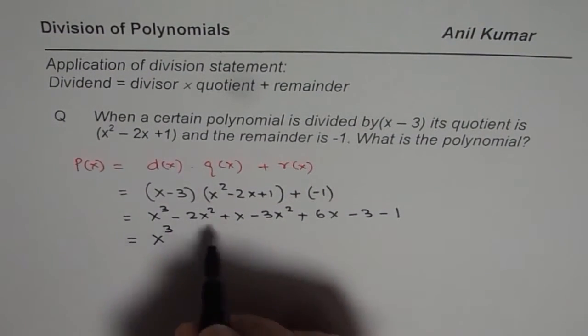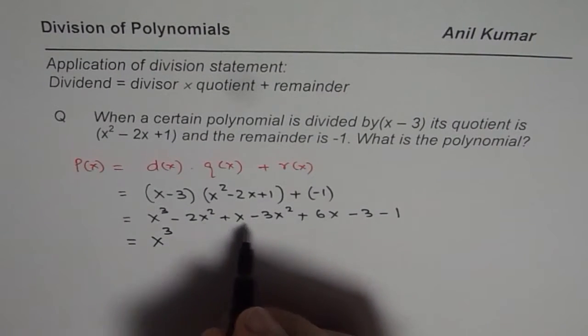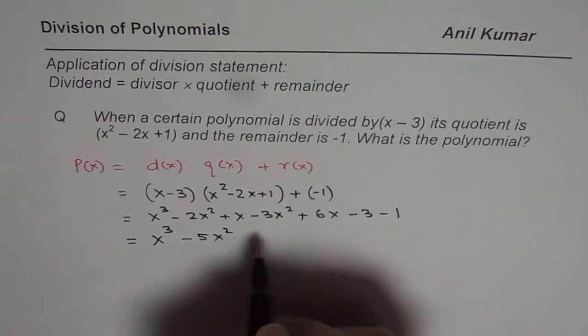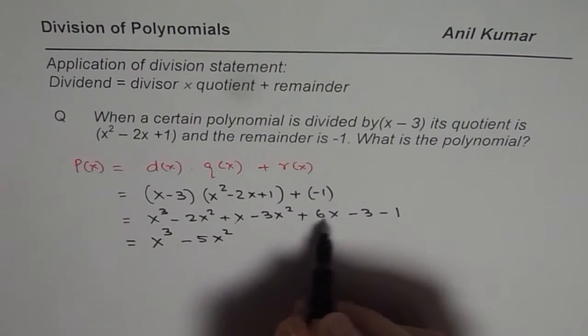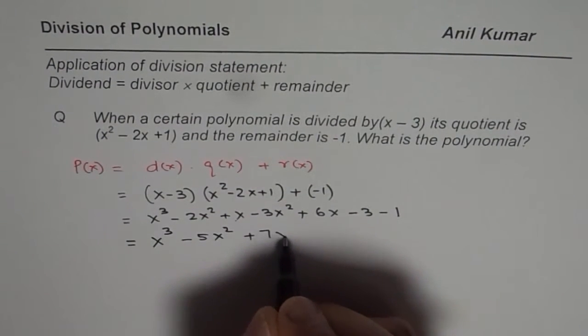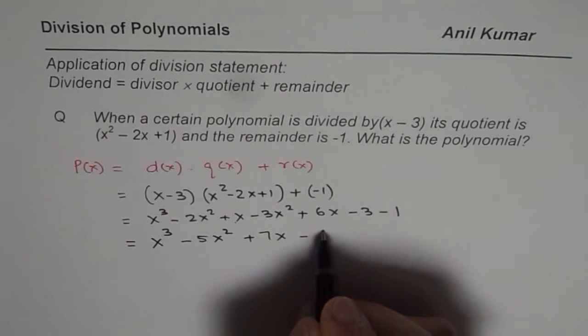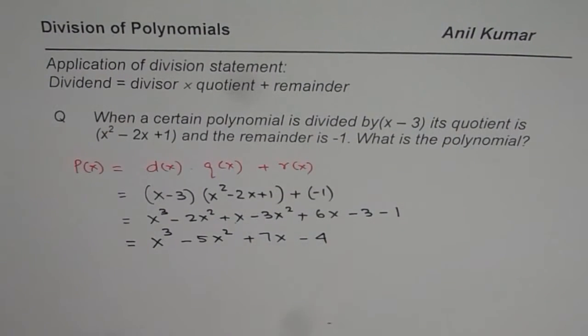Now combine the like terms. We get x cubed. As far as the x squared terms are concerned, two of them, add them, minus 5x squared. x terms are 1 plus 6, which is 7, so we get 7x. And the constants are minus 3 and minus 1, which is minus 4. So that is the polynomial.